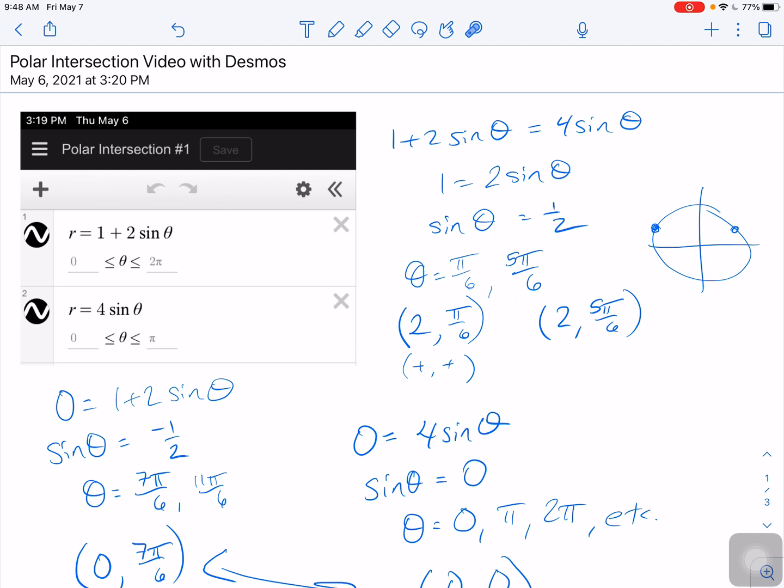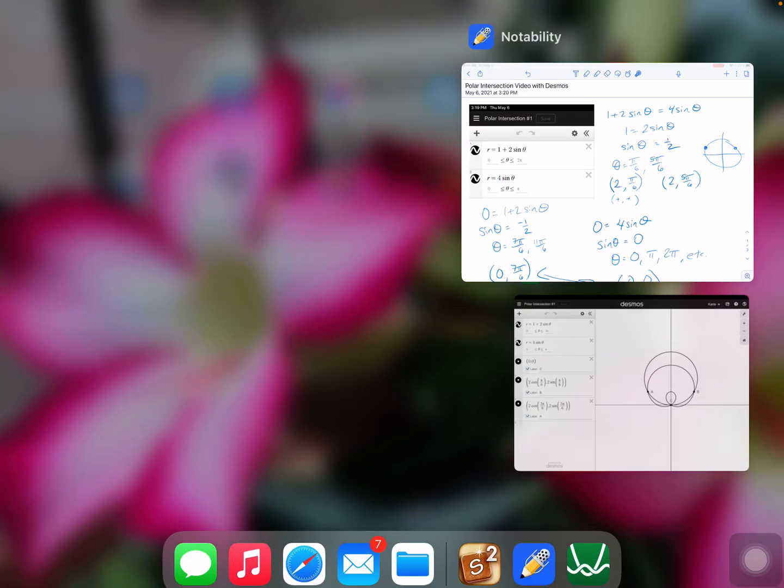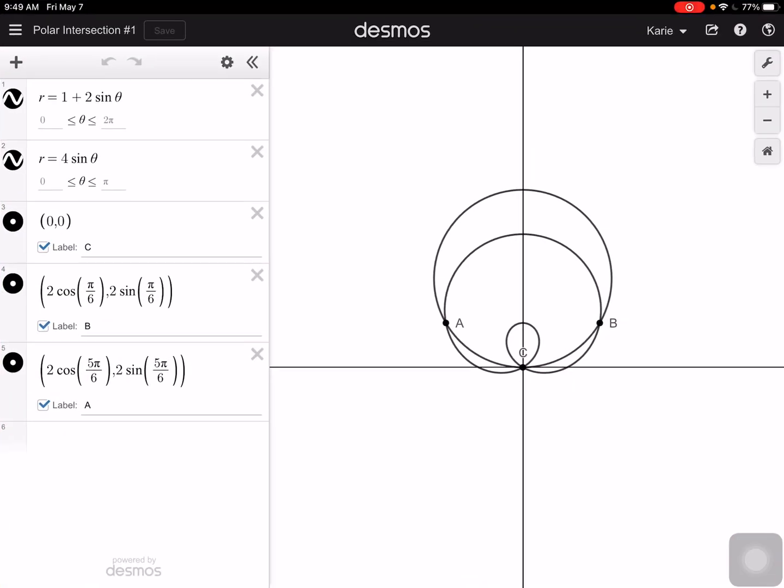That gives me these two values of theta is equal to pi over 6 and 5 pi over 6. When I plug both of those back in to either equation, so I can plug in pi over 6 here, because sine of pi over 6 is 1 half. Half of 2 is 1. 1 plus 1 is 2. I can plug it in here. Sine of pi over 6 is 1 half. Half of 4 is 2. We're good to go in either one. We get the exact same, both r and theta, for those two equations. Same thing happens with 5 pi over 6, but what we notice is that there was a third place where they intersect down here, that point C at the pole.